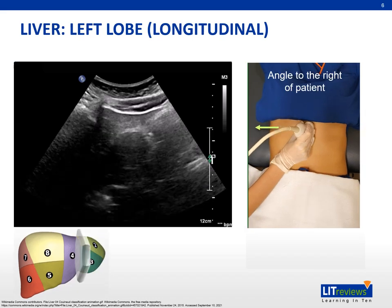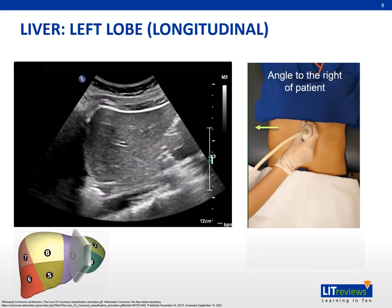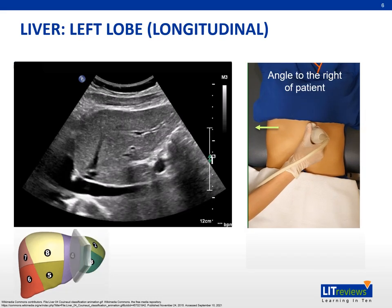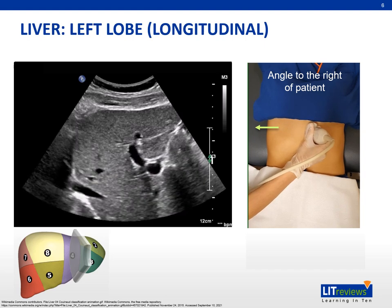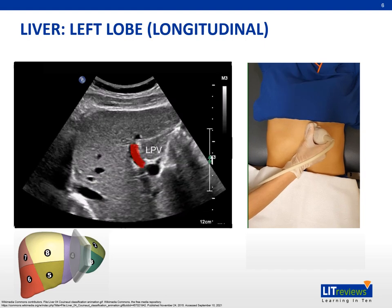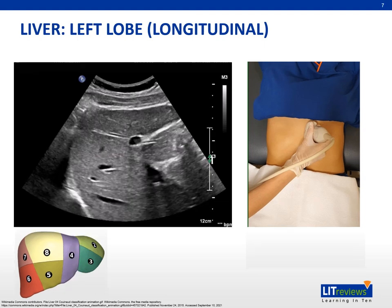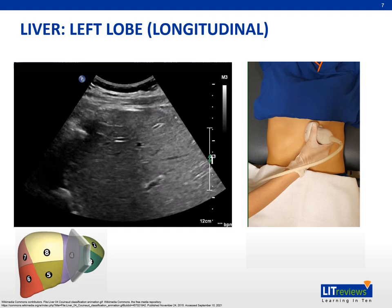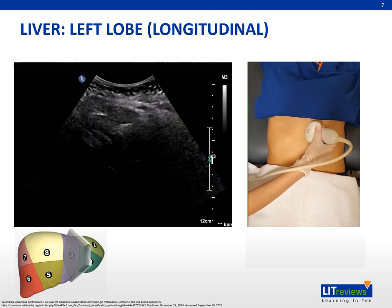Next, we angle the transducer to the right of the patient slowly. Notice the left portal vein coming into view. In this plane, we are looking at the medial segment of the left lobe, namely segment 4. Ensure the medial left lobe is fully screened by angling the transducer all the way to the right.